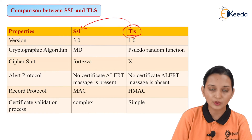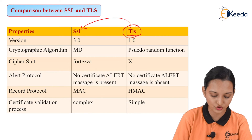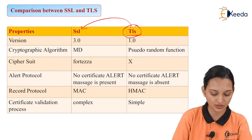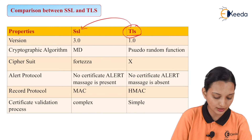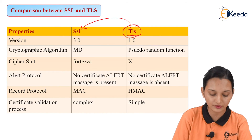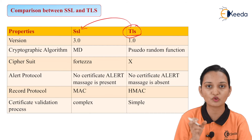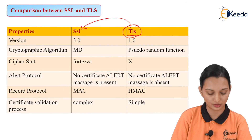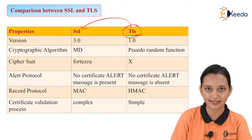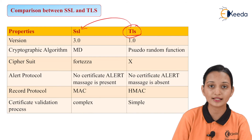Now we will try to compare both with the help of a few properties. First is version: SSL contains version 3.0, while TLS has version 1.0. Cryptographic algorithm: Message Digest is the algorithm used for cryptography with SSL, while a Pseudo Random Function is the algorithm used for cryptography with TLS. Cipher suite used by SSL is Fortezza, and the cipher suite used by TLS is AES.